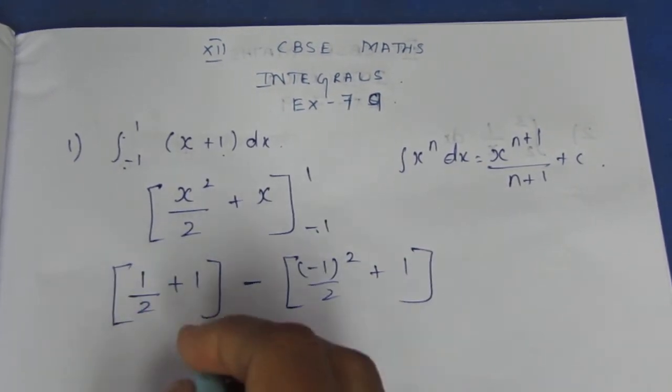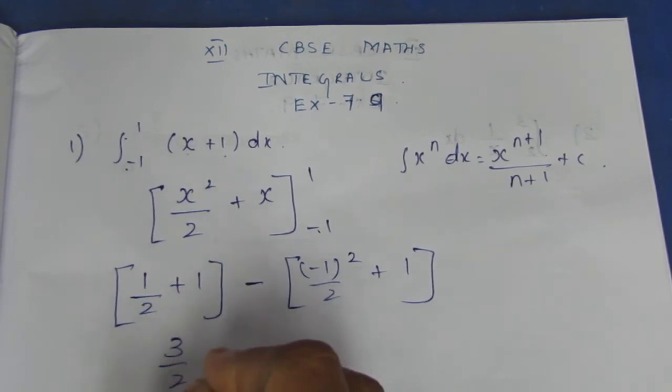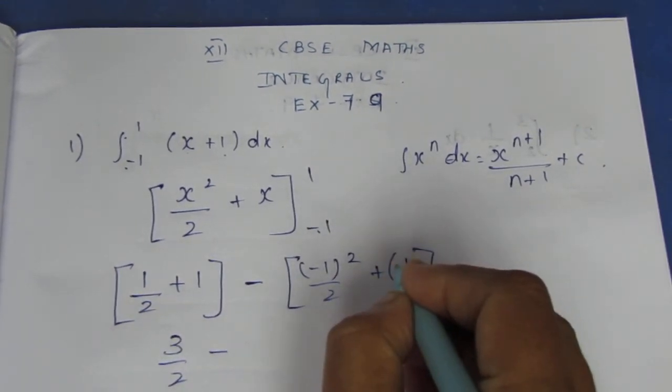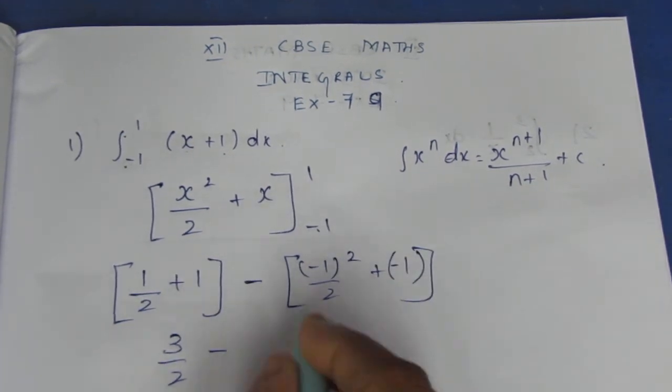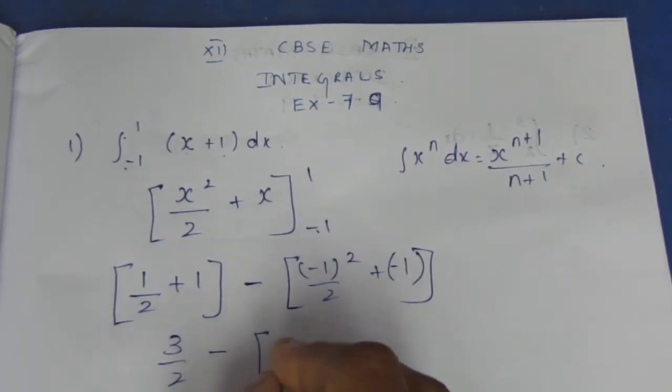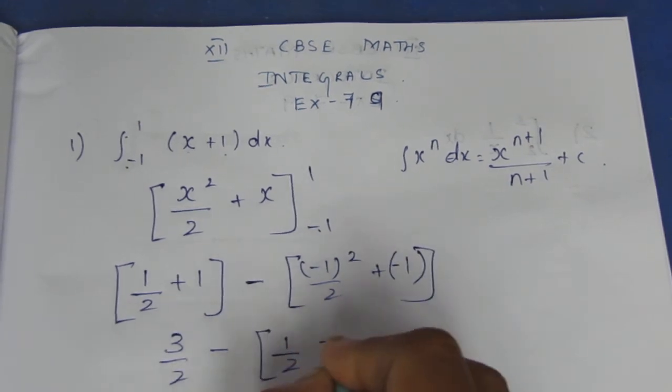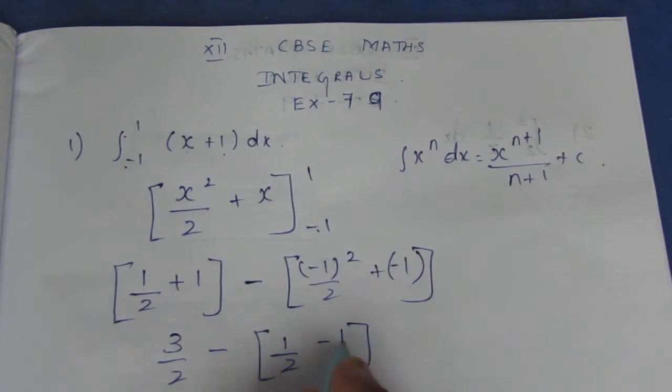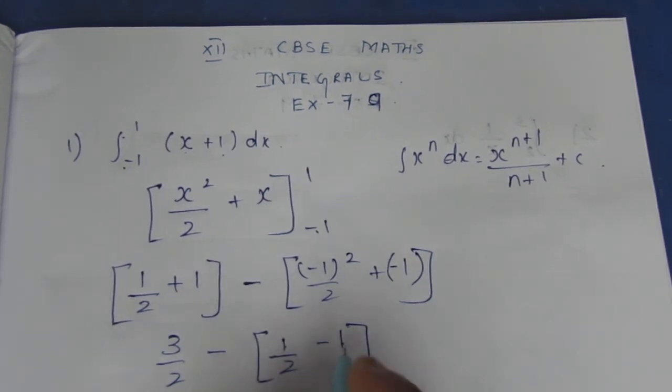It becomes 2 ones are 2 plus 1 is 3 by 2, minus here it becomes 1 by 2 minus 1.